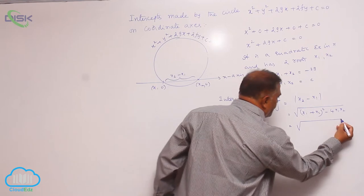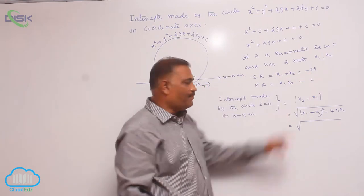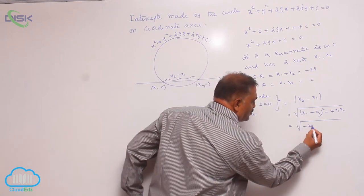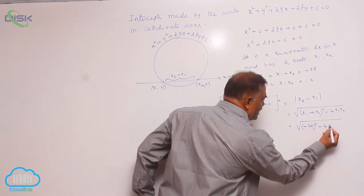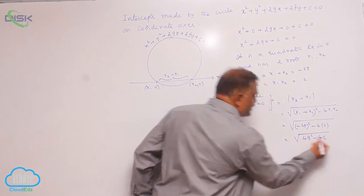Substituting the values, this becomes √[(-2g)² - 4c] = √(4g² - 4c).